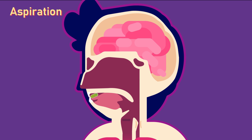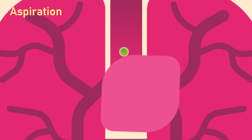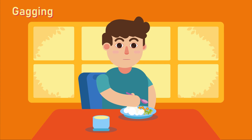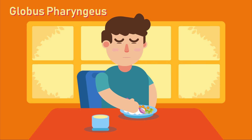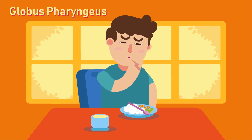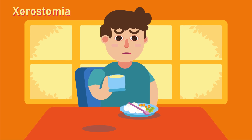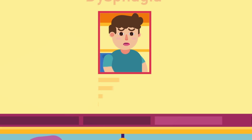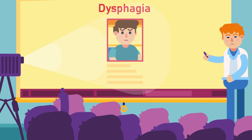Aspiration, in which food or drink goes down the trachea instead of the esophagus, can further lead to aspiration pneumonia. Gagging, in which the patient may feel that food is causing them to vomit. Globus pharyngeus, a feeling of a lump in the throat. And xerostomia, meaning dry mouth, which may itself lead to dysphagia or odynophagia.